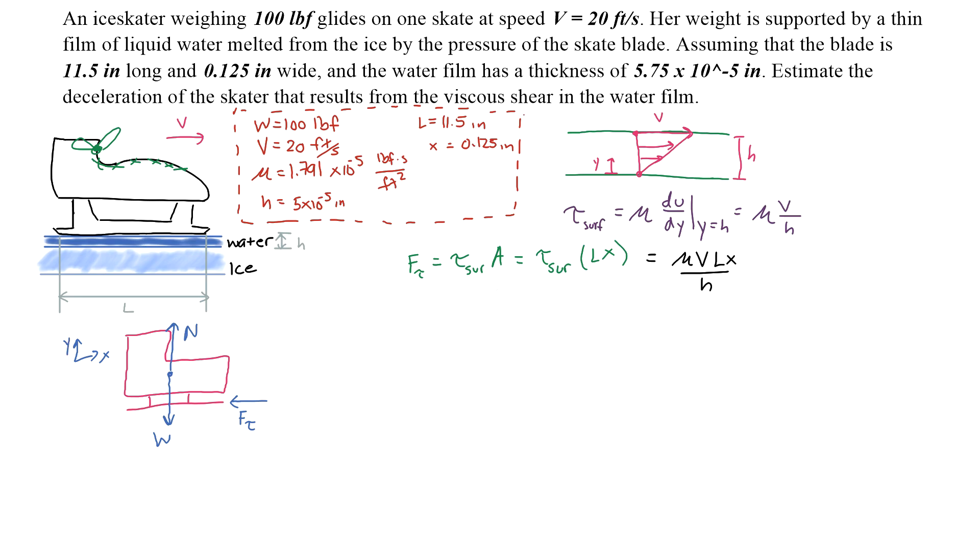Now we have our simple free body diagram, and all we have to do is sum the forces in the X direction. So negative F_shear equals mass times acceleration in the X direction.